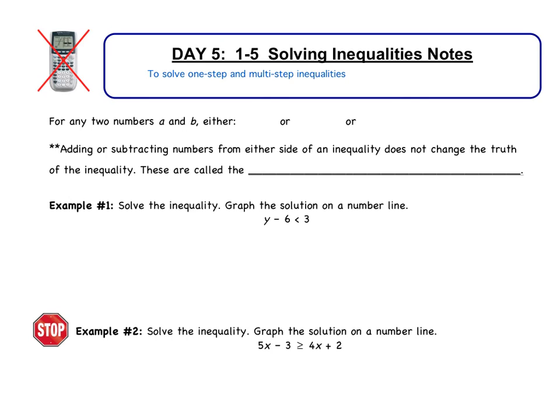For any two numbers a and b, either a has to be less than b, a has to be greater than b, or a has to be equal to b. The equal case we've already done — those are just solving equations. These two inequality cases are what we're going to focus on today, where one expression is smaller. One property when solving inequalities is that adding or subtracting numbers from either side does not change the truth of the inequality. These are called the addition and subtraction properties of inequality.